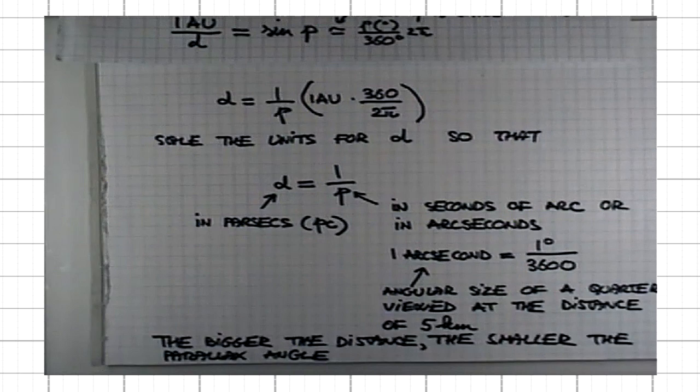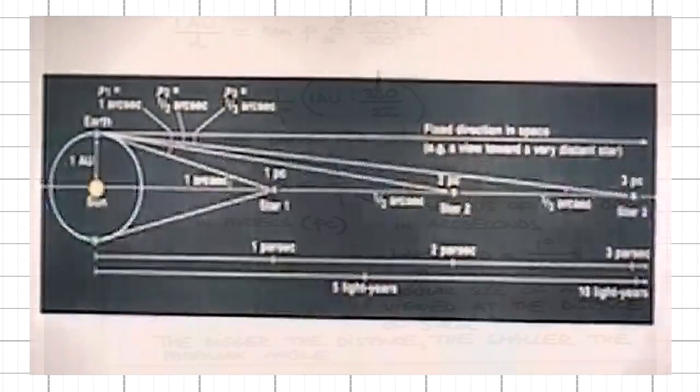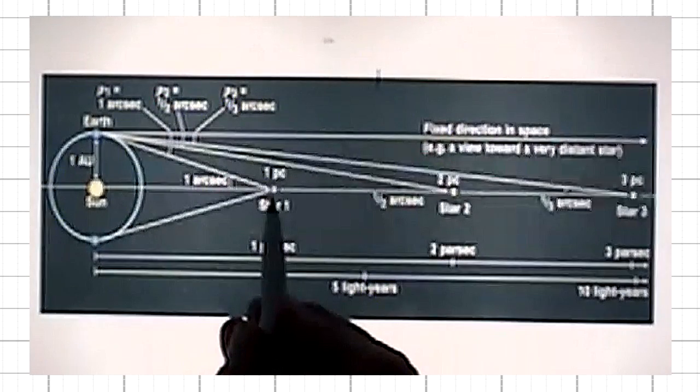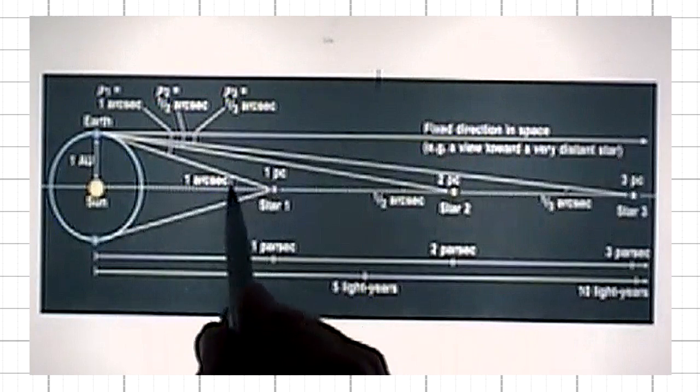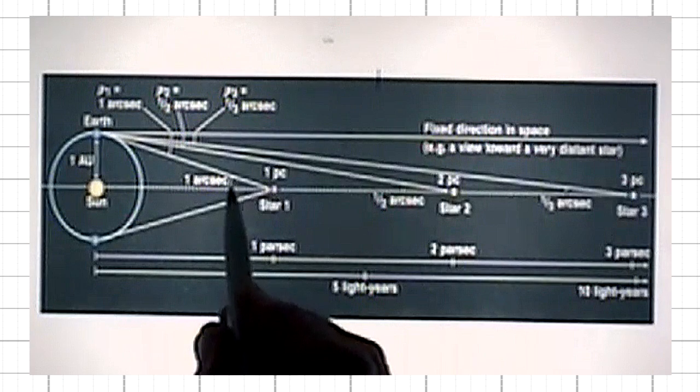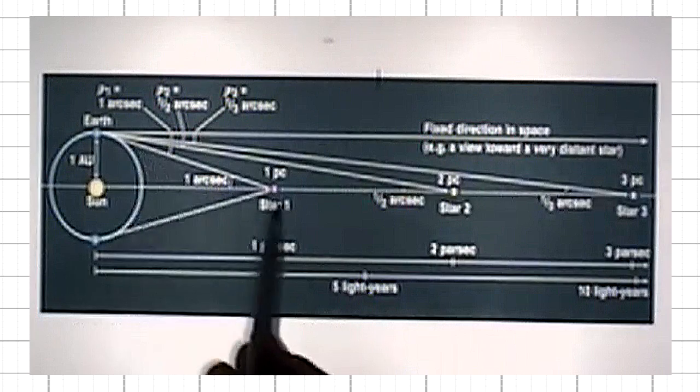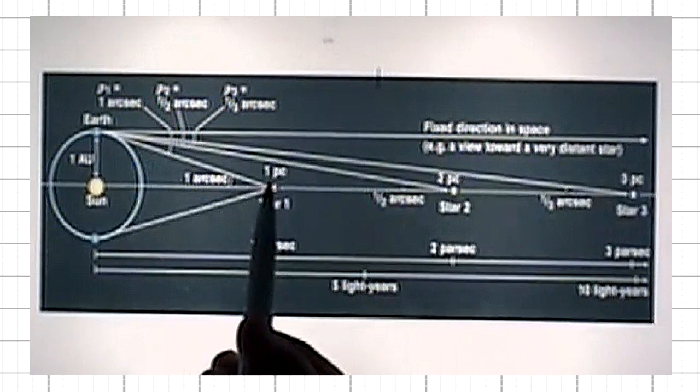Let me show you that graphically, as illustrated here. Say we have a star with parallax angle of one arc second. Then 1 over 1 is 1. The distance to this star, number 1, is one parsec, one pc.